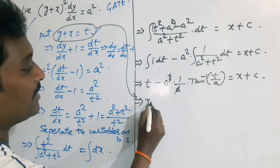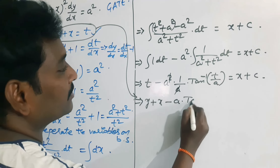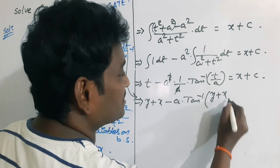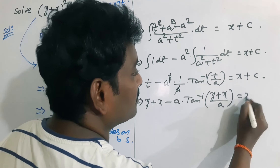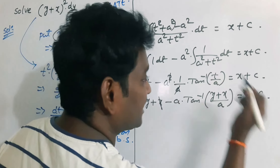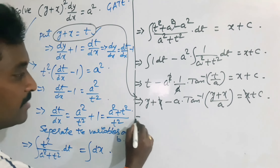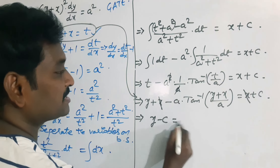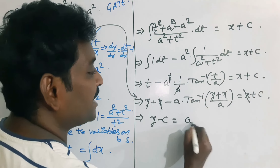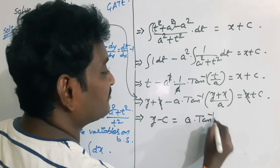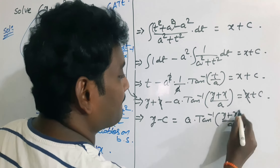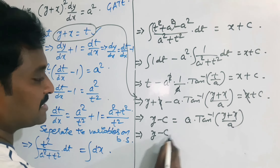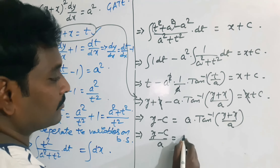Substituting t = y + x: (y + x) − a · tan⁻¹((y + x)/a) = x + c. We observe that x cancels from both sides, giving y − c = a · tan⁻¹((y + x)/a).